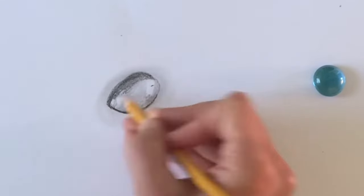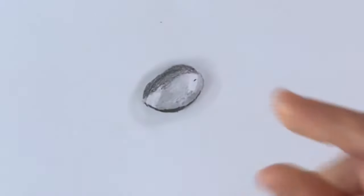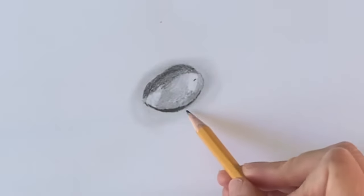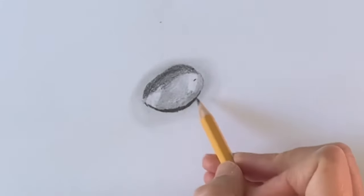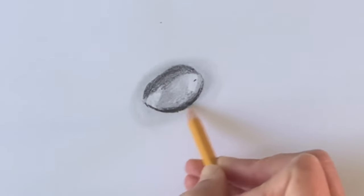I'm darkening the top part of my water droplet—that's going to kind of give it the rounded effect. I'm going to make it as dark as possible on the bottom of the water droplet so it looks three-dimensional.